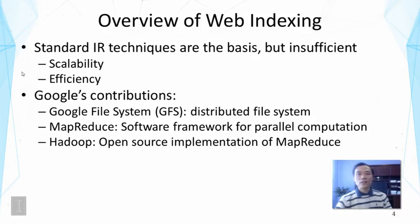To address these challenges, Google has made a number of innovations. One is the Google File System, a general distributed file system that helps programmers manage files stored on a cluster of machines. The second is MapReduce, a general software framework for supporting parallel computation. Hadoop is the most well-known open-source implementation of MapReduce, now used in many applications.